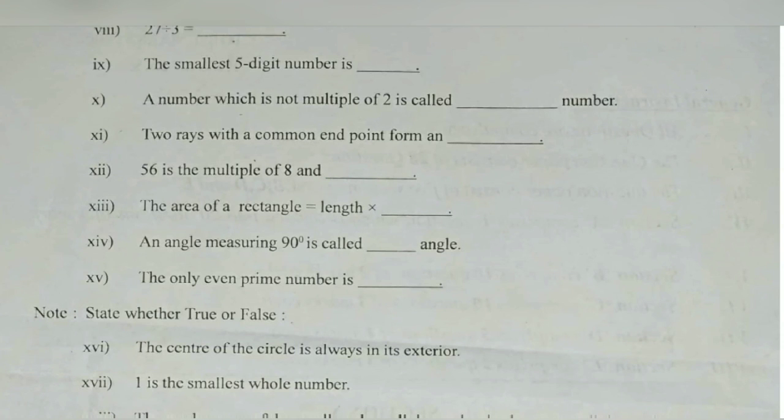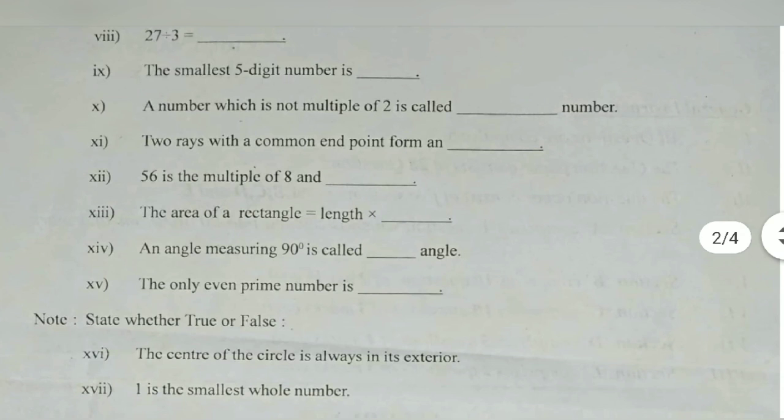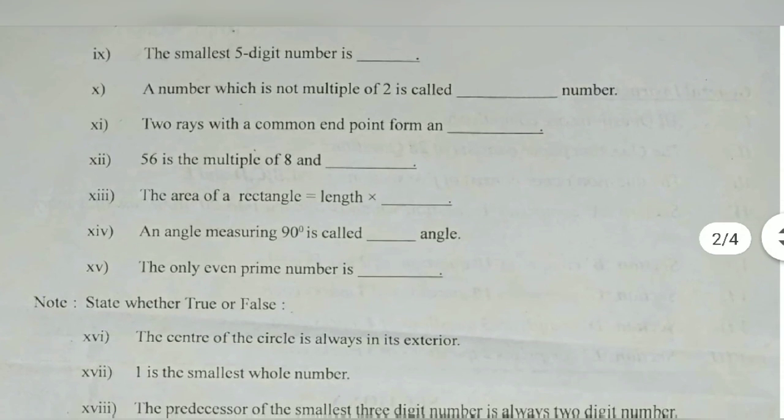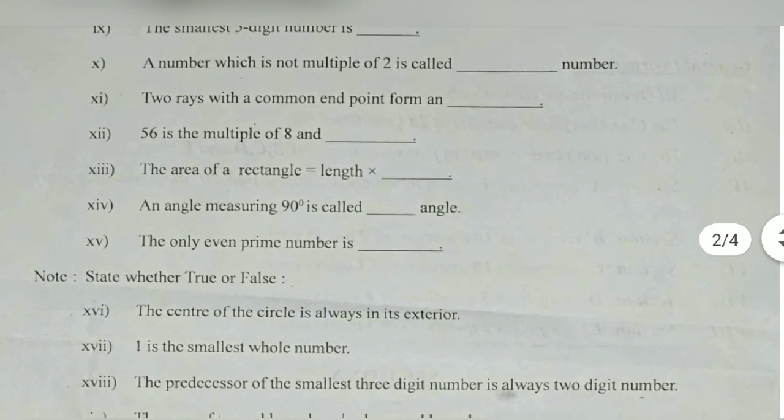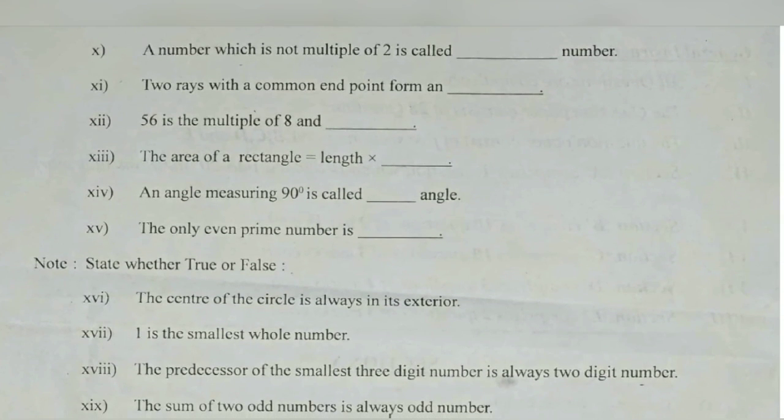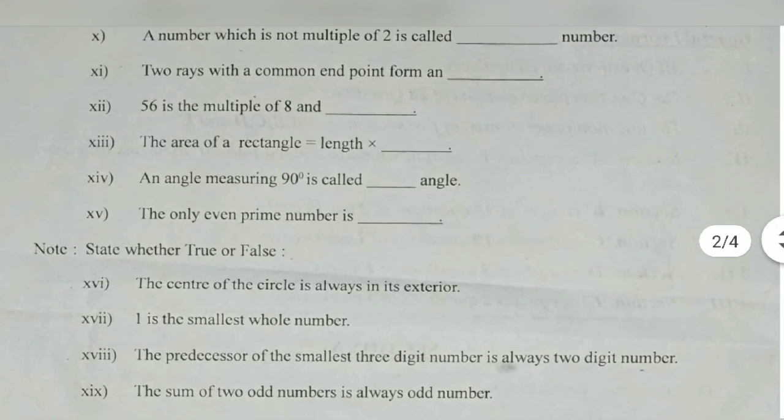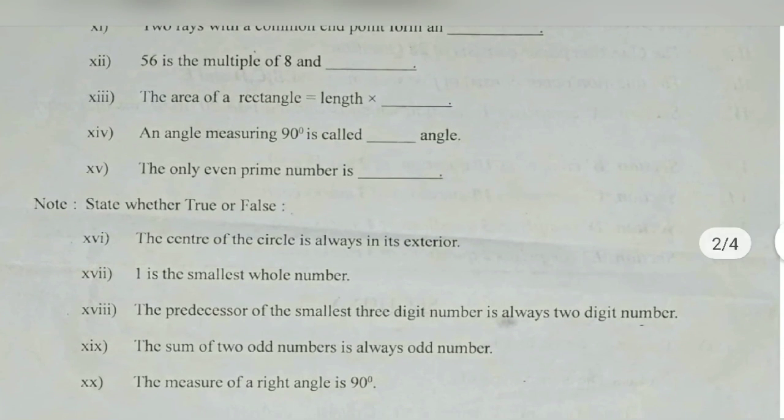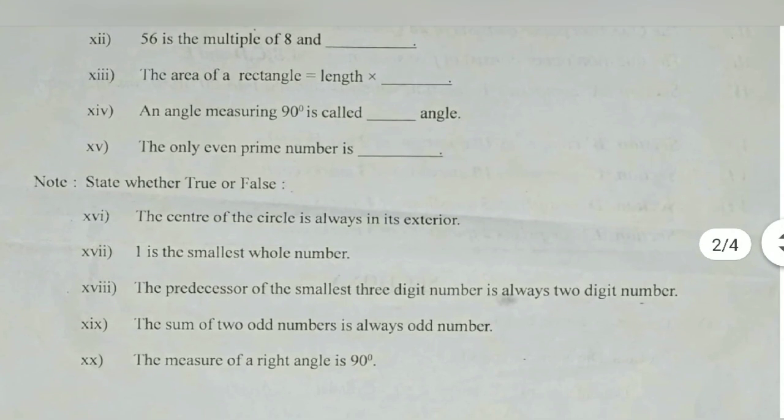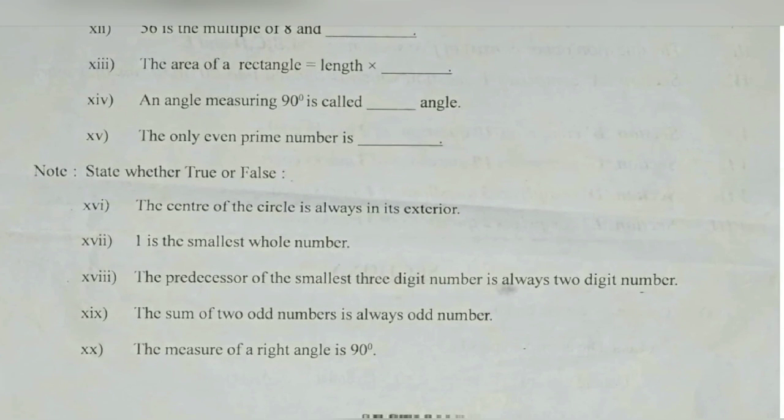2 raised are common endpoint form a line. 56 is the multiple of 8 and 7, 8's are 56, 7 8's are 56, the answer is 7. The area of a rectangle is length into breadth and perimeter of the rectangle is 2 length plus 2 breadth. An angle of 90 degrees is called right angle. The only even prime number is 2.